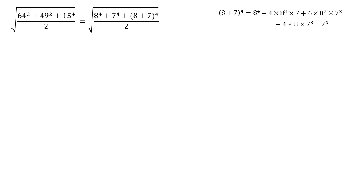So if we substitute this into our expression so far, we're going to get another 8 to the 4 and another 7 to the 4 there. So we're going to have two lots of 8 to the power of 4 plus 7 to the power of 4 plus the rest of our expansion. And it's still all over 2.